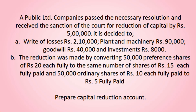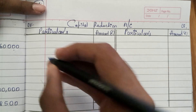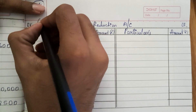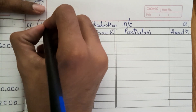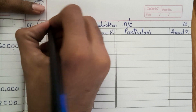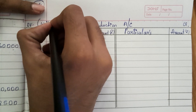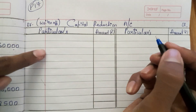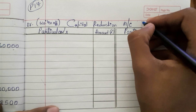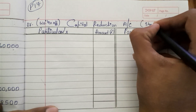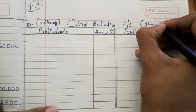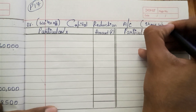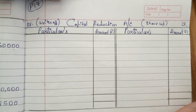Now see here, this is the format of preparing the capital reduction account. On the debit side, we will write whatever losses have been written off. On the credit side, we will show all the share capital items.